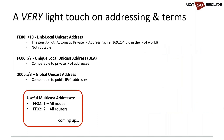The fe80 addresses are link-local unicast addresses. Any IPv6-enabled interface will have a fe80 address, equivalent to the 169.254 auto-addressing scheme in IPv4, and they're not routable. Unique local unicast addresses (ULAs) are comparable to private IPv4 addresses like 10.x or 172.16.x. The global unicast addresses are routable and comparable to public IPv4 addresses — we'll see a lot more of those.